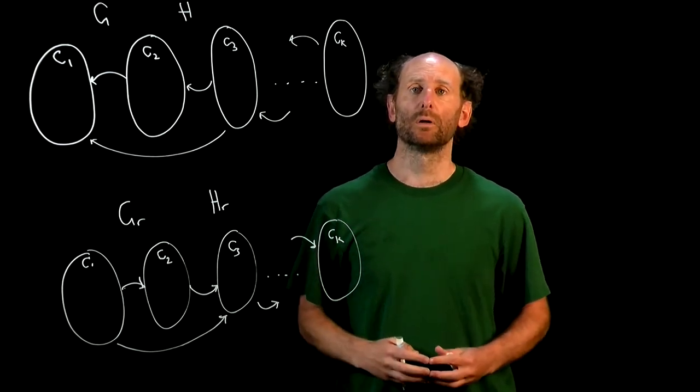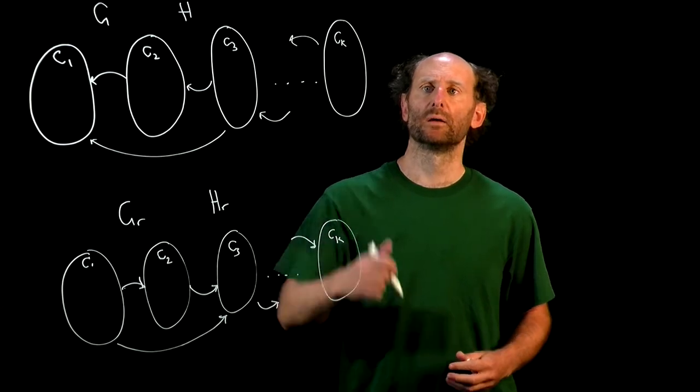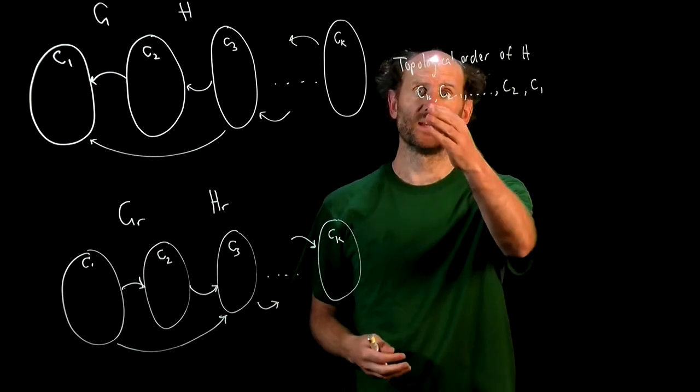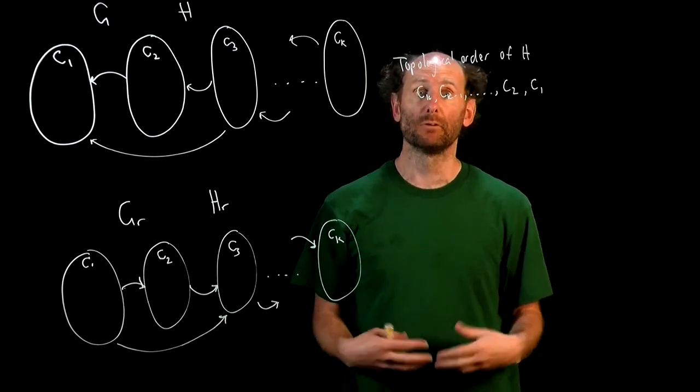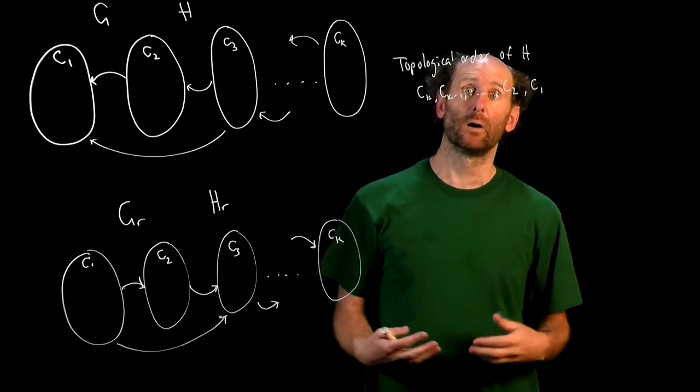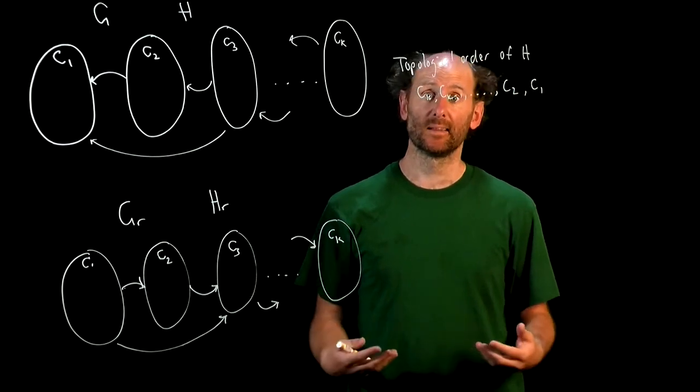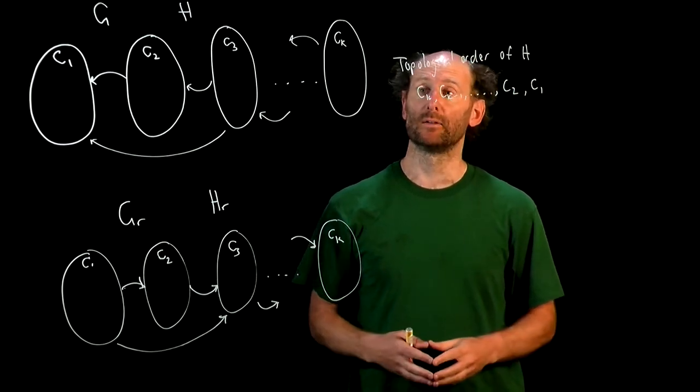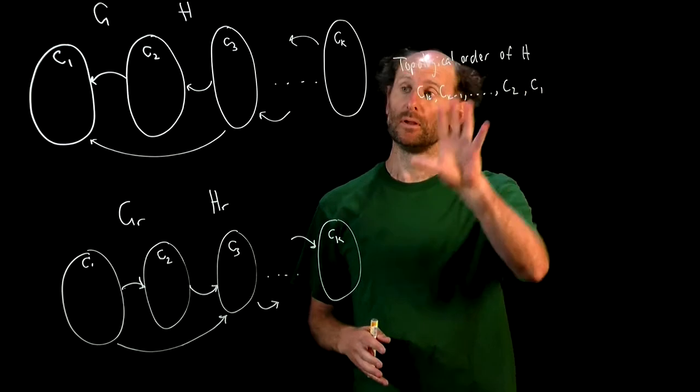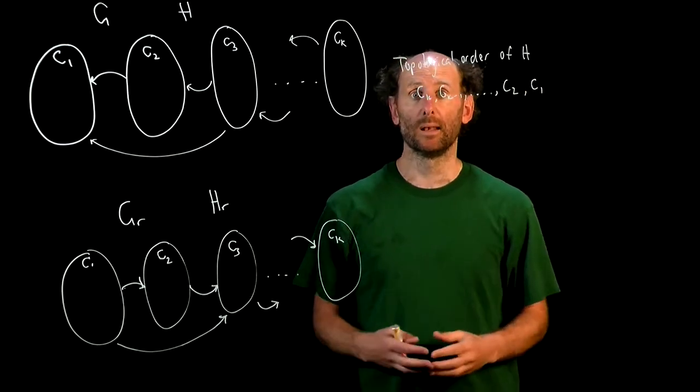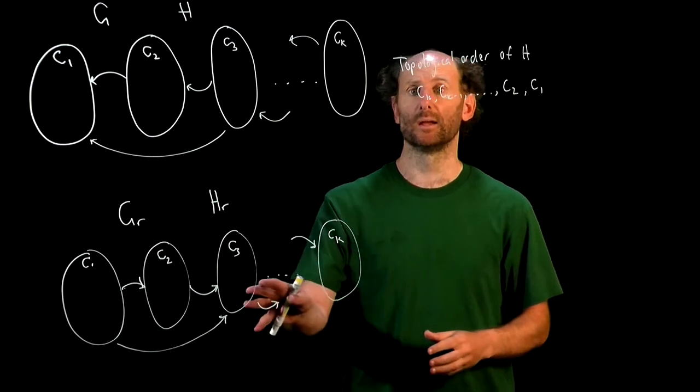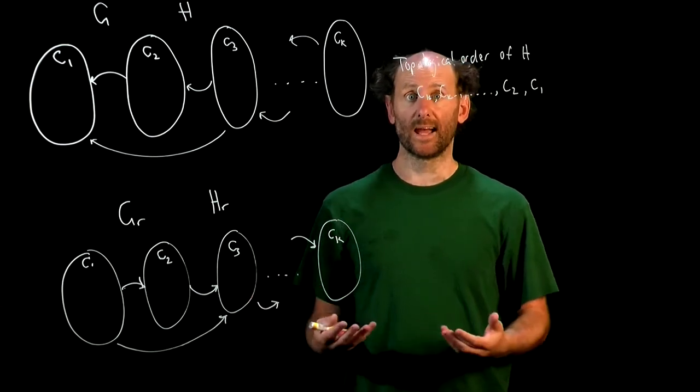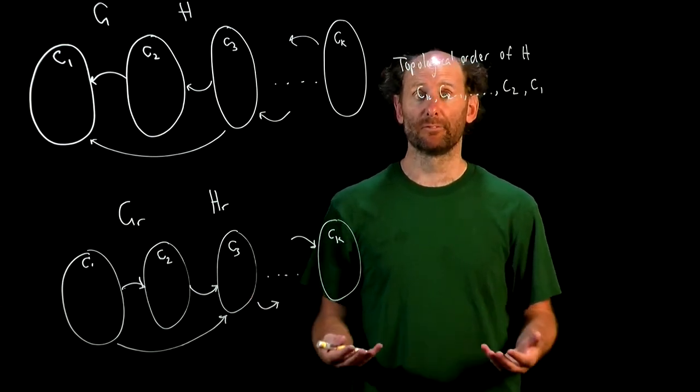So a topological order of H looks like, we have Ck down to C1, and we can find that by running a DFS on G and listing the nodes in reverse order of done times. Okay, so you can check the details there.